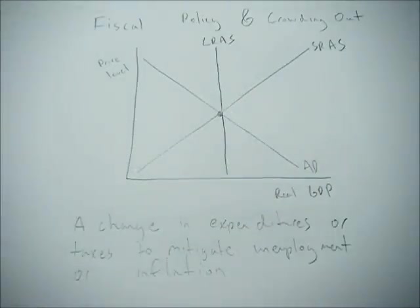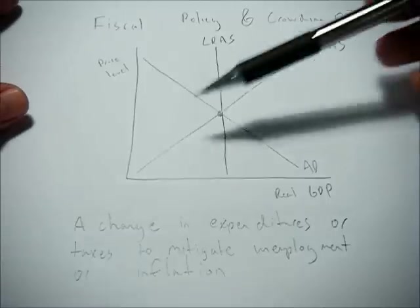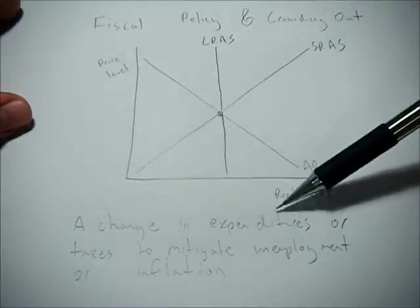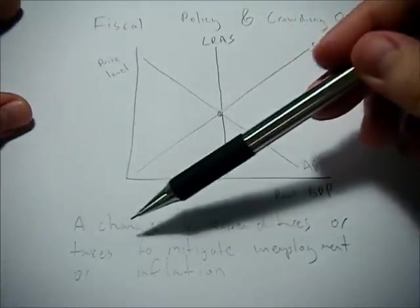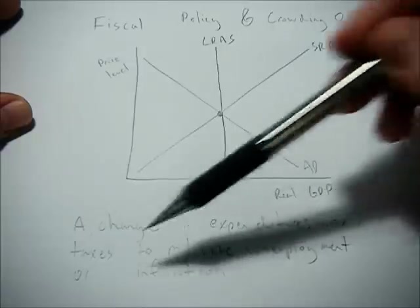Hi, this video is going to go over fiscal policy and crowding out. So first, a quick definition of fiscal policy. It's policy that the government can enact. It's a change in government expenditures or taxes to mitigate unemployment or inflation.